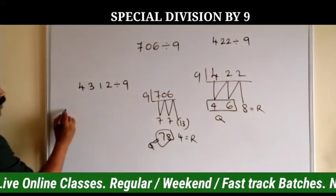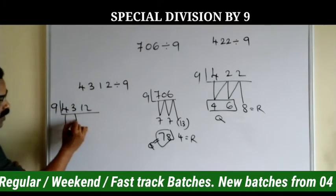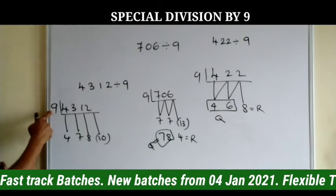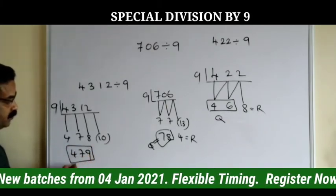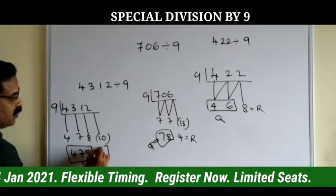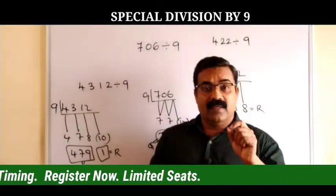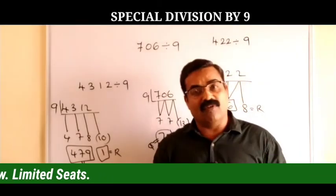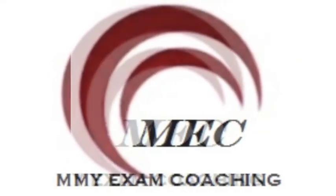Similarly, divide 4312 by 9. Write 4 first, then 4 plus 3 is 7, then 7 plus 1 is 8, then 8 plus 2 is 10. Since 10 is more than 9, carry the 1: the quotient becomes 479, and 1 plus 0 gives 1 as the remainder. So whenever a number is divided by 9, use this easy method to find the quotient and remainder. Practice with more numbers to increase your speed.